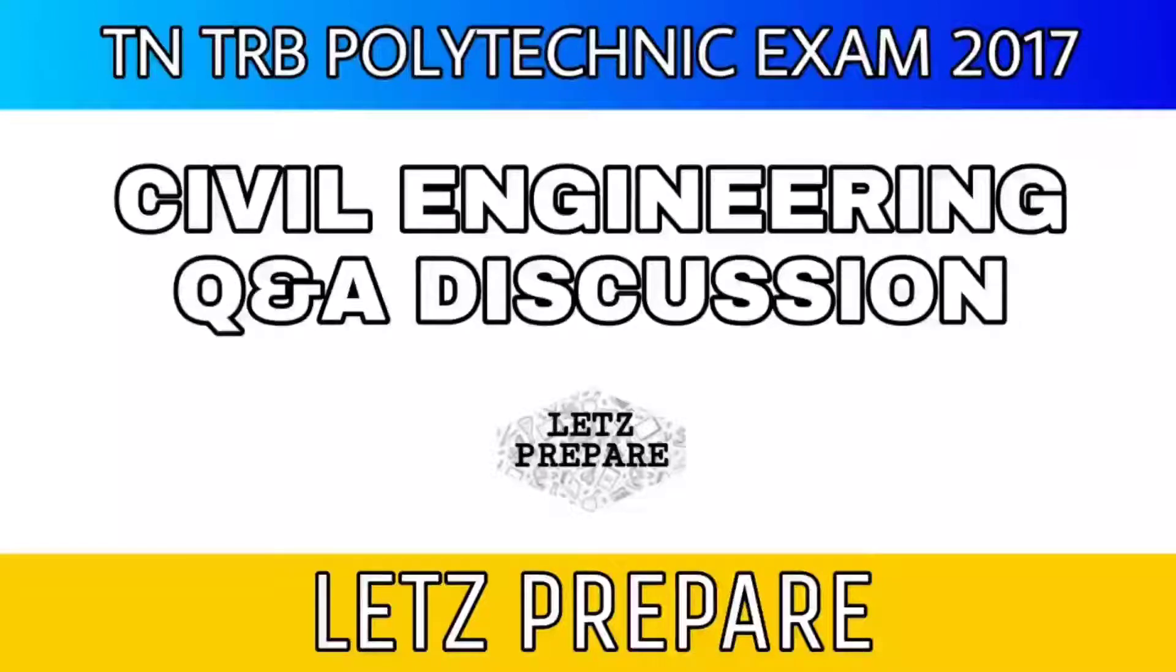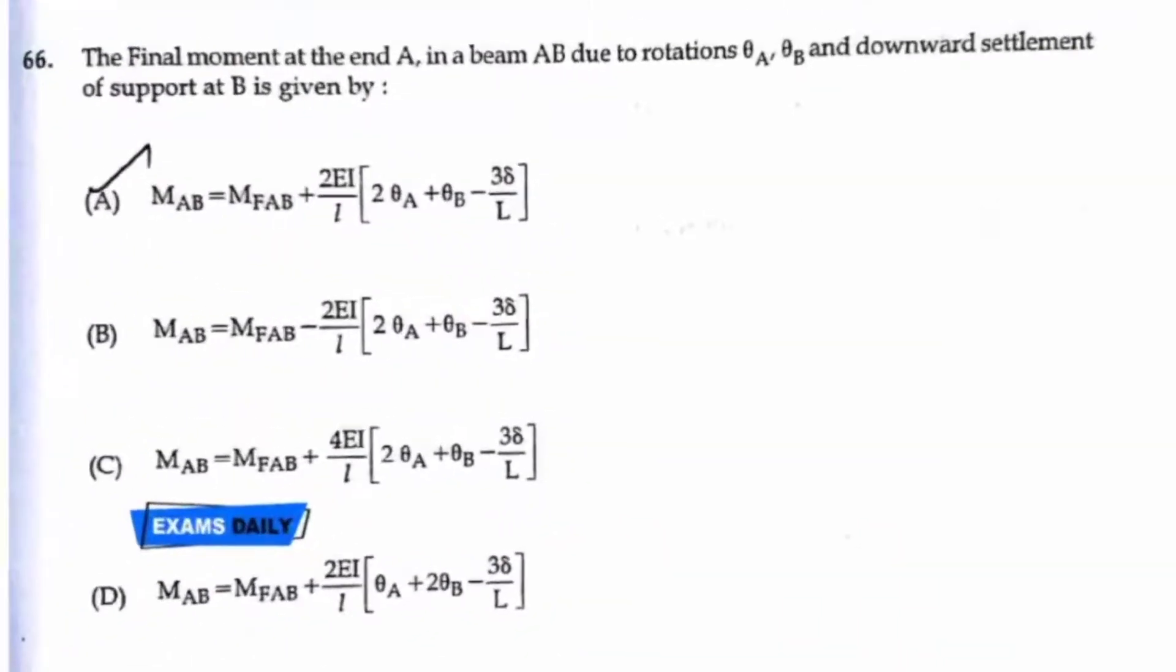Let's prepare on the TRB Polytechnic exam 2017 civil engineering question paper. Question number 66: The final moment at the end A in a beam AB due to the rotations theta A, theta B, and the downward settlement at support B is given by which of these formulas? Here, option A is the right answer.